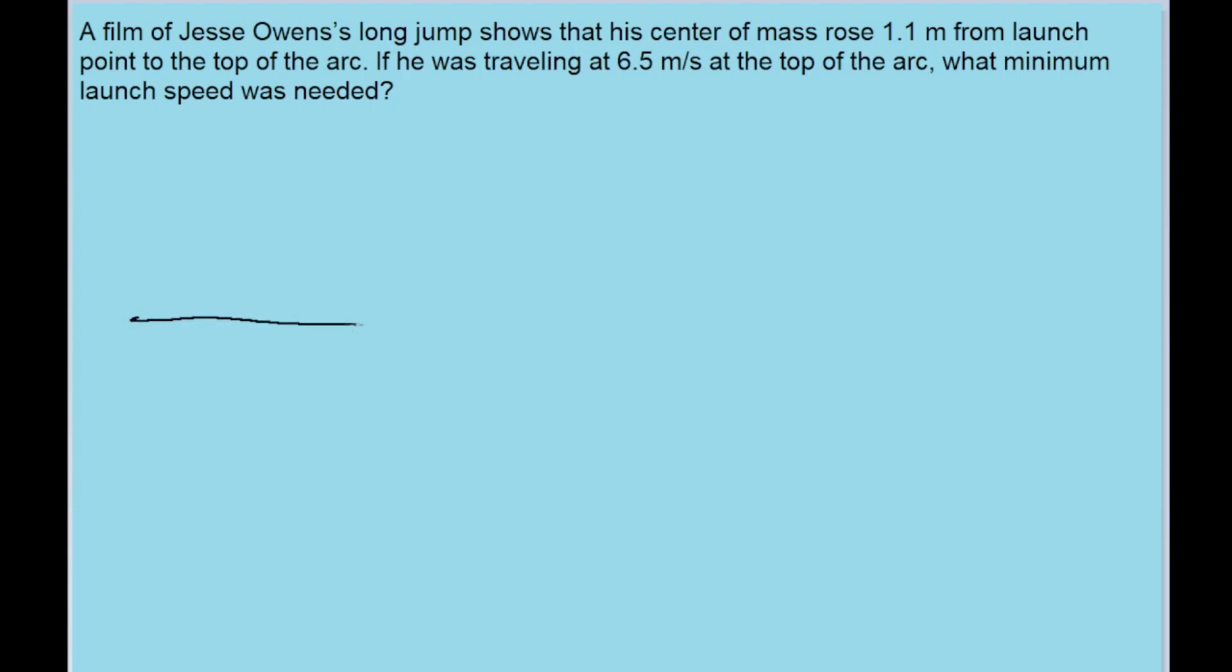In this problem we are told about Jesse Owens and we're given a situation in which he jumped in an arc shape. We're given the height, the maximum height of his motion, and his speed at the top of the arc, but we're looking for his initial speed as he launched.